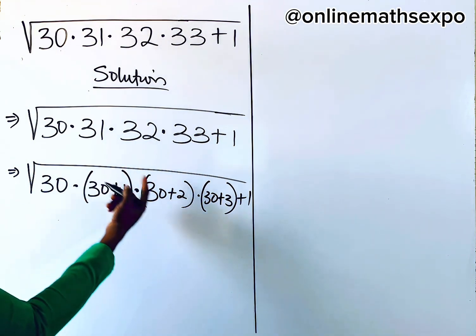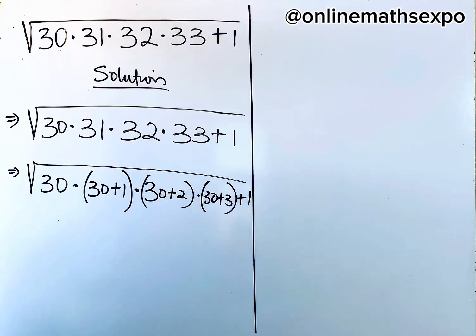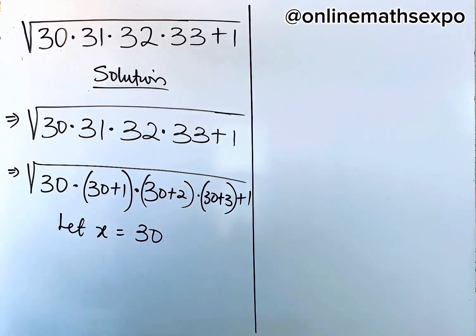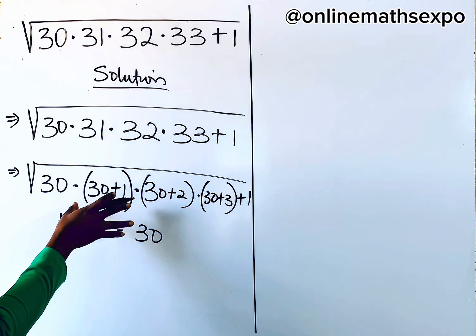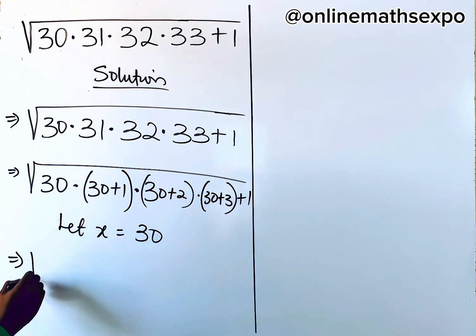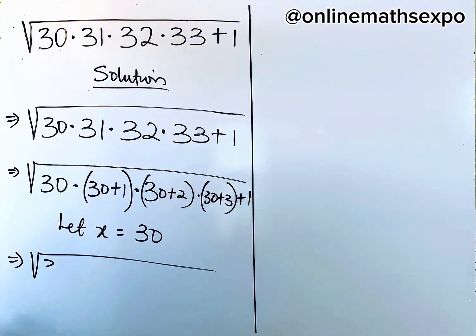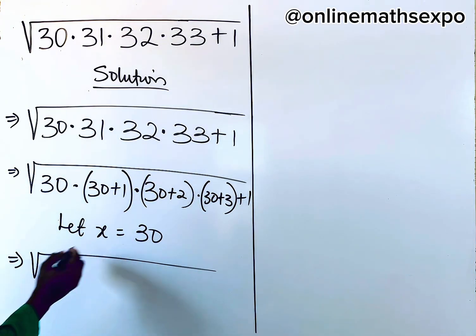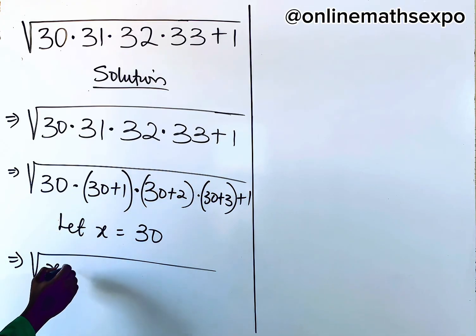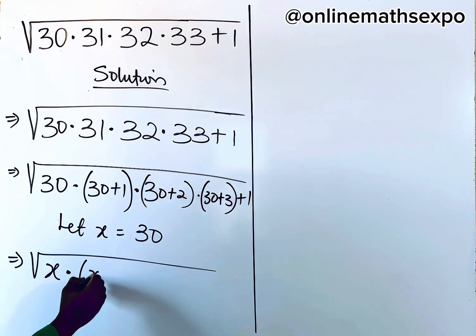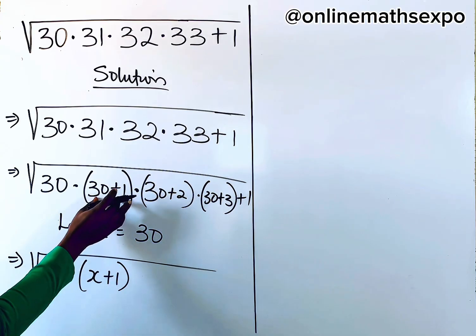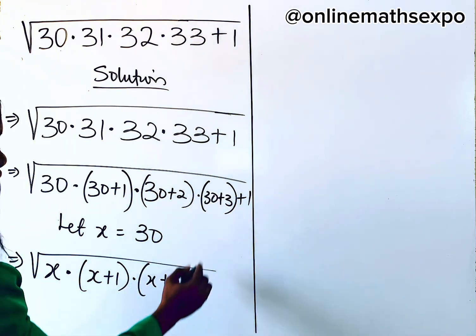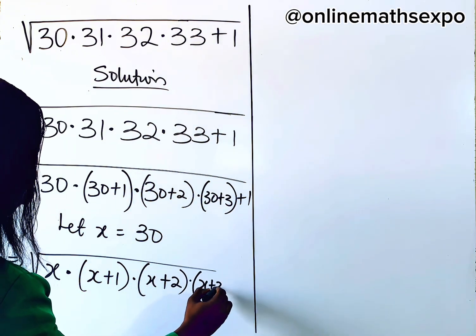You see that 30 is repeated, so we can let x equal to 30. Now we replace: we have the square root of x multiplied by (x + 1), then (x + 2), and finally (x + 3), then add 1.